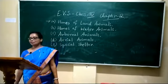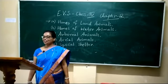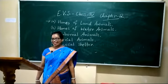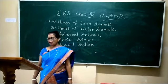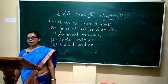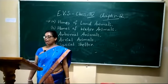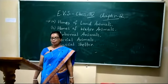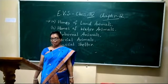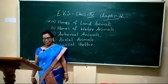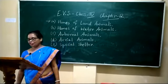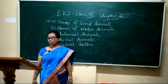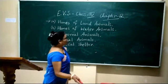Animals' homes come in a variety of shapes and sizes. There are different types of animal houses. Here are some of the most common ones and the animals that use them: hives, caves, shells, nests, etc. So, dear children, in this chapter we shall learn the following topics.